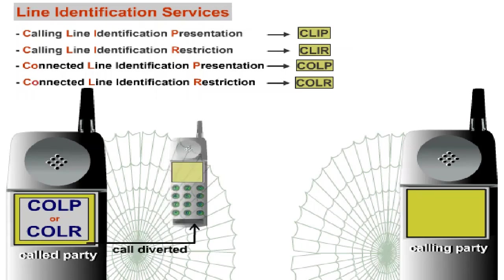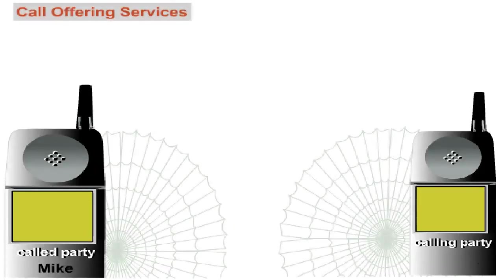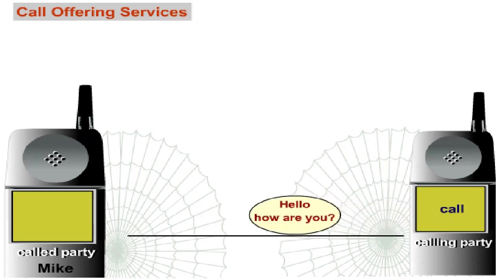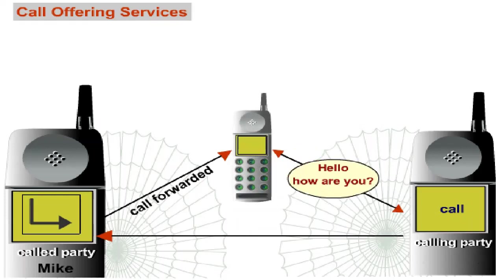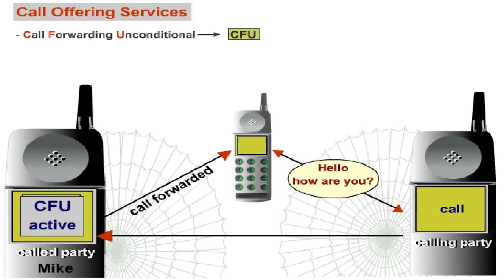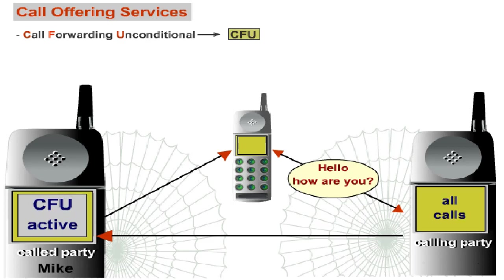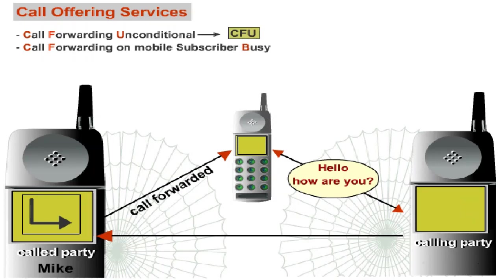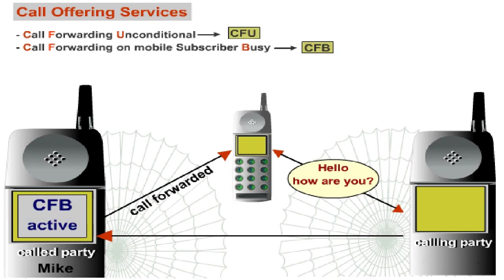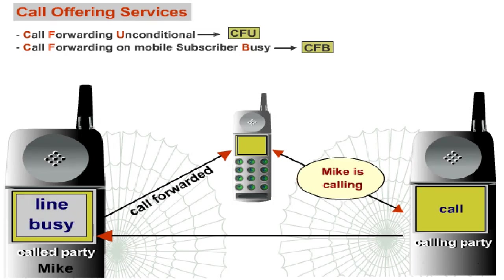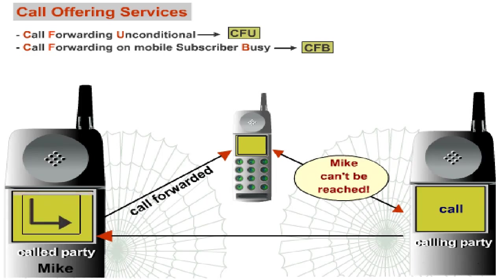Call offering services allow a customer to forward incoming calls to other target numbers. Call forwarding unconditional, CFU, ensures that all incoming calls are diverted to a number specified by the customer, independent of the conditions of the call. Call forwarding on mobile subscriber busy, CFB, diverts calls only if the called subscriber is making a call and the line is busy. Calls can also be diverted if the called party can't be reached, because the phone is switched off, or because the call is not accepted.